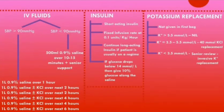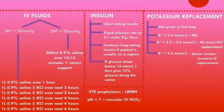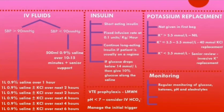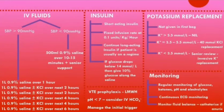Patients in DKA are very dehydrated and at risk of developing clots, so venous thromboembolism prophylaxis — often low molecular weight heparin — is important. If pH is less than 7.0, indicating very severe acidosis, intravenous bicarbonate can be considered, though this is a specialist decision. It is important to manage the initial trigger of DKA, such as infection or myocardial infarction. Monitoring is also essential: regularly monitor glucose, ketones, pH, and electrolytes; continuous ECG monitoring for arrhythmias due to potassium imbalances; and monitor fluid balance, catheterizing the patient if anuric due to possible severe acute kidney injury.